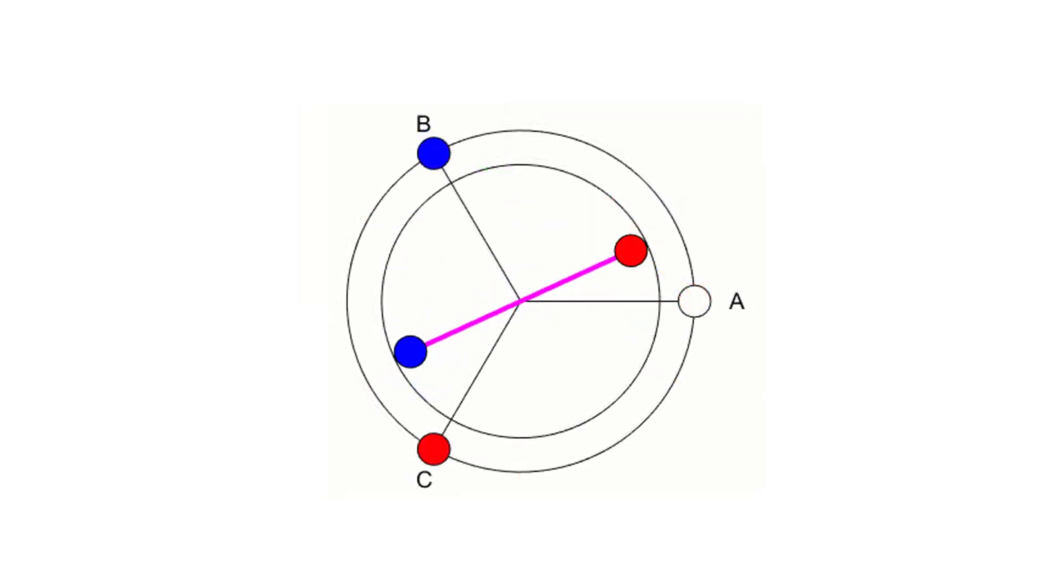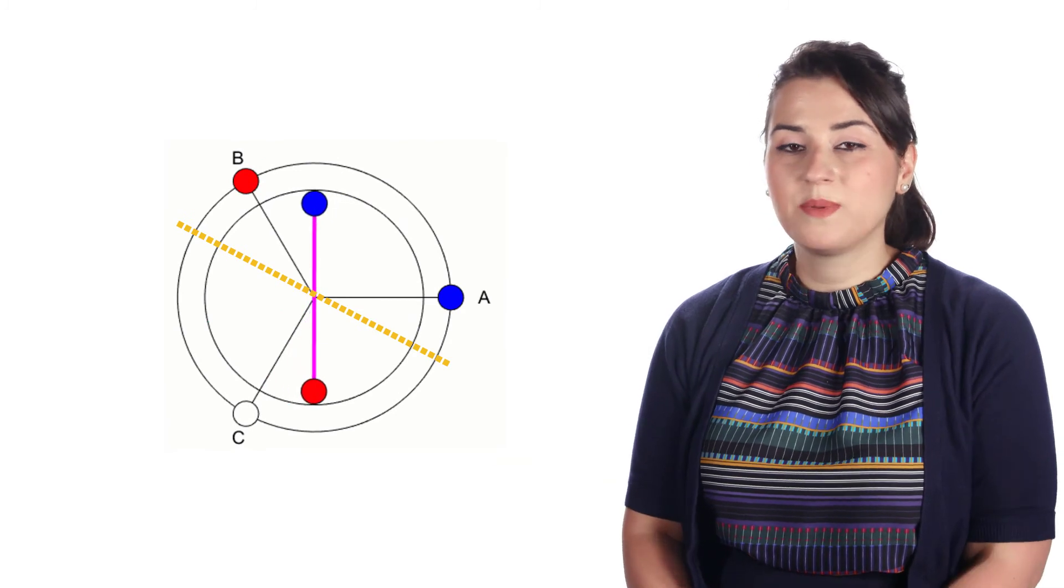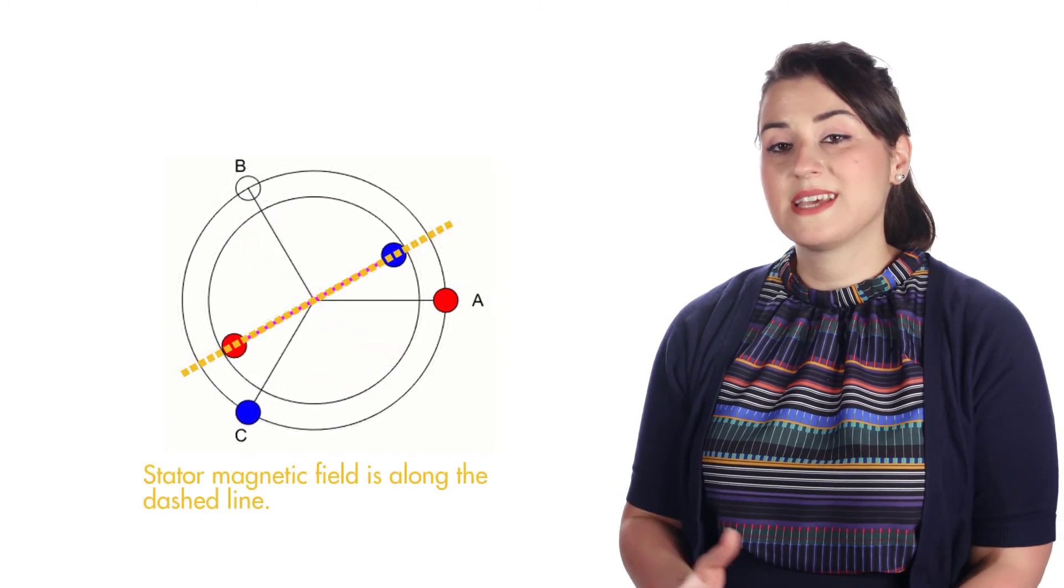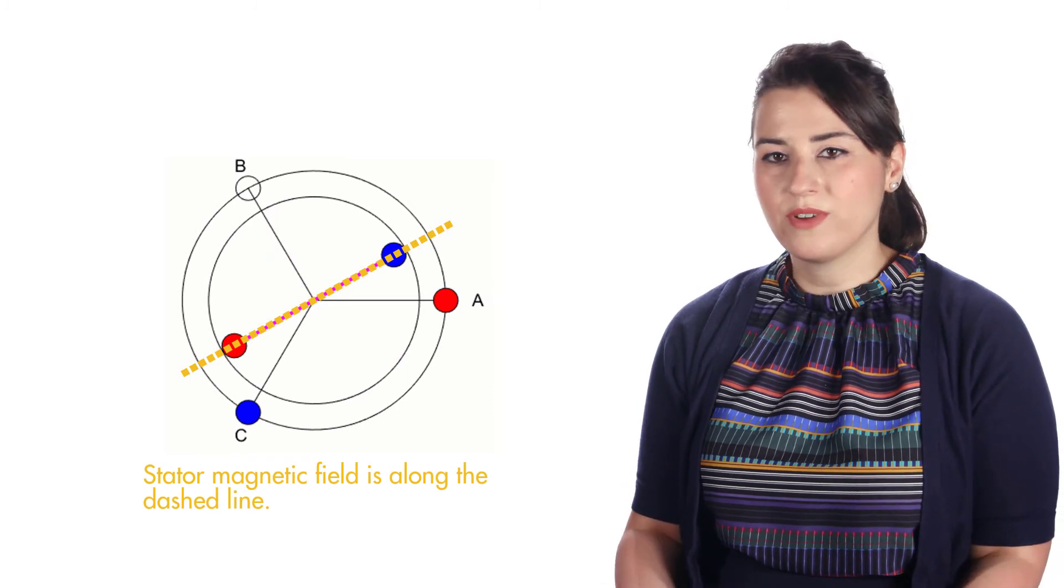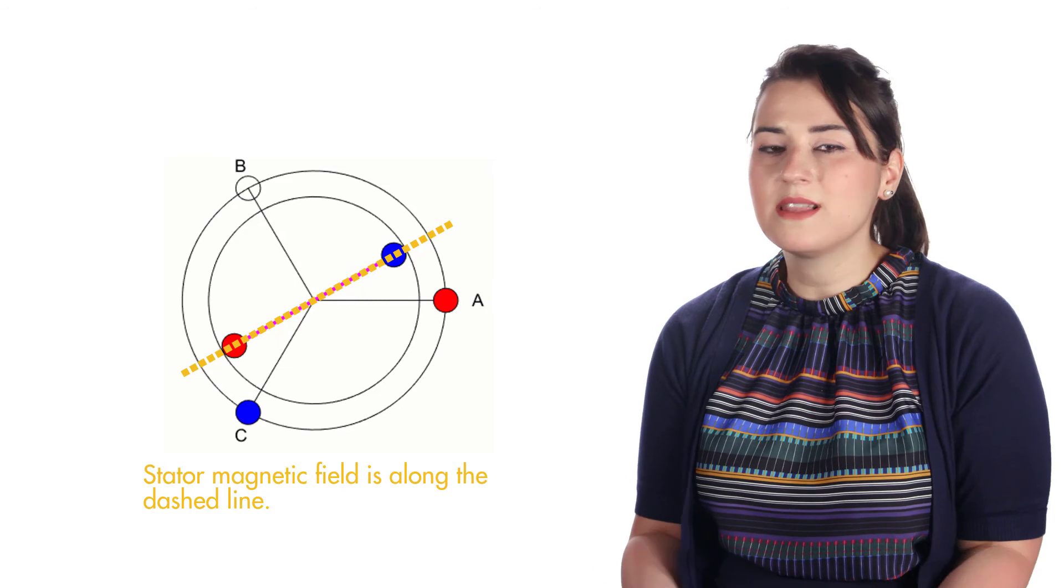Let's also show the stator magnetic field we discussed earlier on the animation. As you can see, the commutation occurs in such a way that the rotor never aligns with the stator magnetic field, but it's always chasing it. Here are the two facts that can explain this behavior. First, when the rotor and stator magnetic fields align perfectly, the motor creates zero torque, so we never let them align.